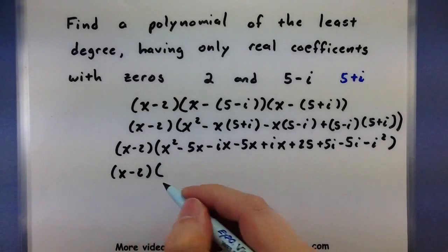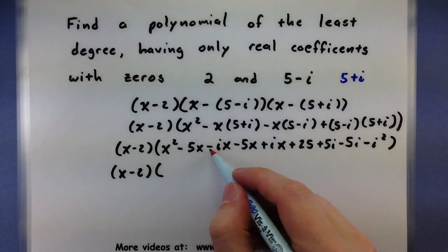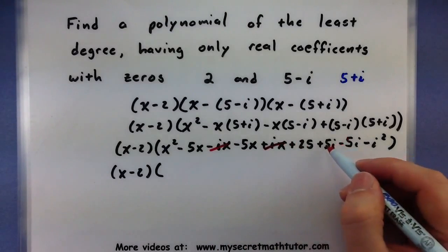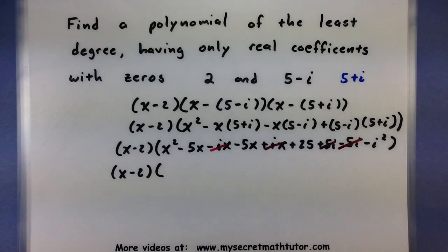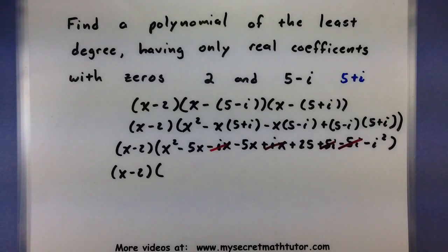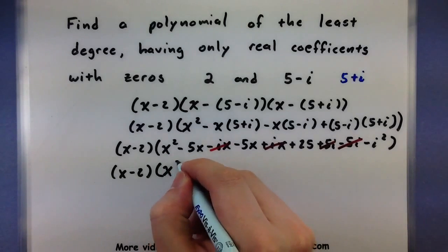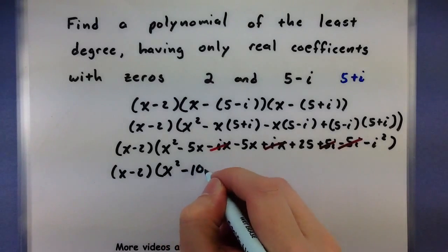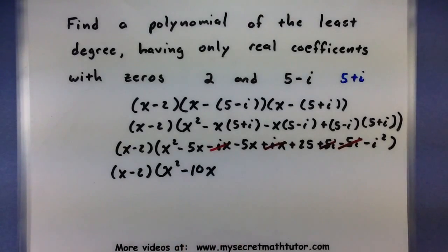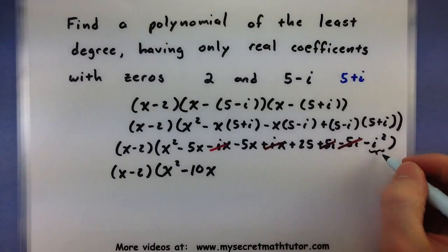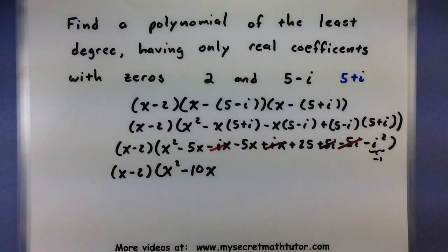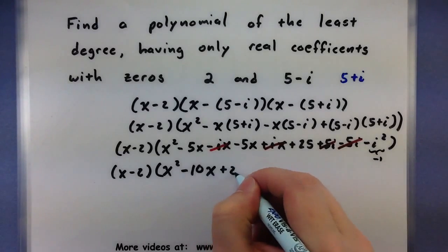There are a lot of terms, but many cancel. The minus ix and plus ix cancel. The plus 5i and minus 5i cancel. That leaves x squared minus 10x, and 25 minus i squared. Since i squared equals negative 1, minus(minus 1) is plus 1, so we get plus 26. The product is x squared minus 10x plus 26.